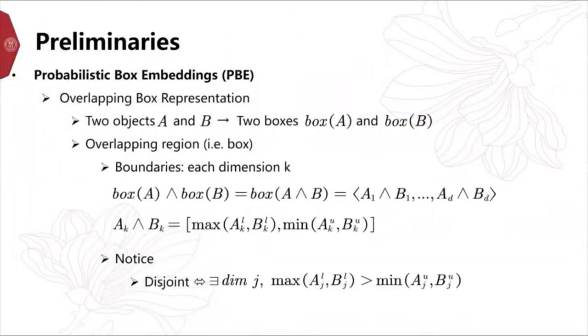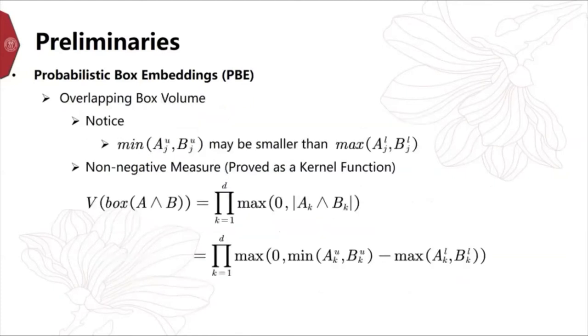For pairwise relations given two objects A and B, they are embedded to two boxes. The overlapping region between them is still a box, and the boundaries of the overlapping box can be calculated as the following formula. If two boxes are disjoint, there always exists a dimension that the computed lower bound can be larger than the upper bound. Noticing that the upper bound of overlapping box may be smaller than lower bound, but the volume is always non-negative. We calculate the volume of the overlapping box as below.